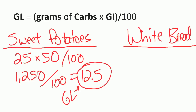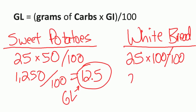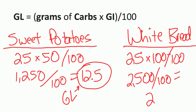Now let's calculate the glycemic load for 25 grams of carbs coming from white bread. That's 25 grams of carbs times a glycemic index of about 100, divided by 100. That gives us 2,500 divided by 100, which equals a glycemic load of 25. By the way, about two slices of white bread — maybe even a little less — yields 25 carbs. So we're comparing two slices of white bread versus 4 ounces of sweet potatoes.